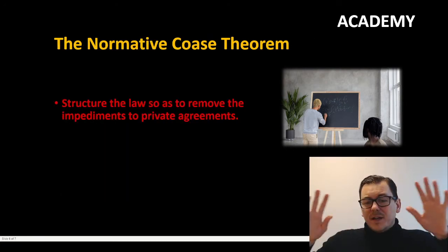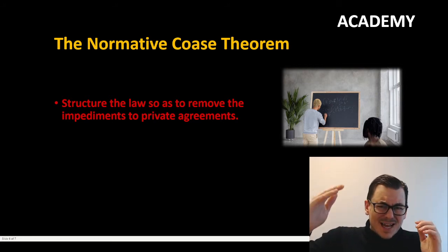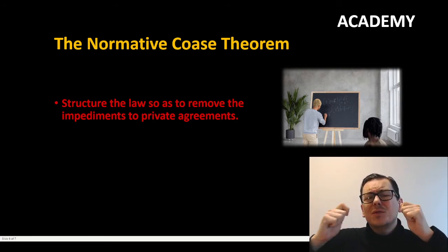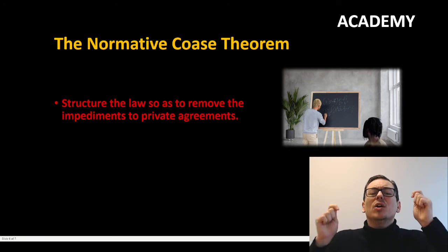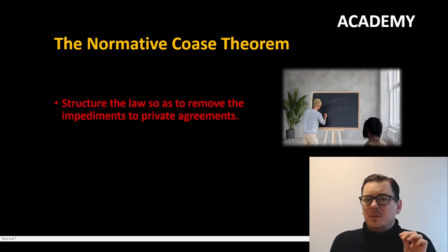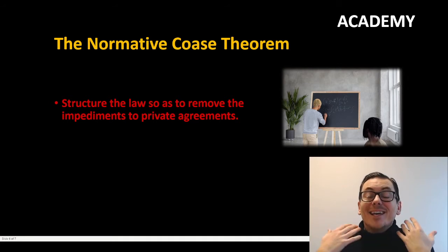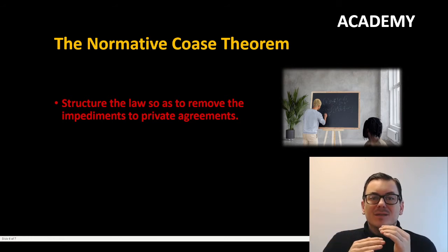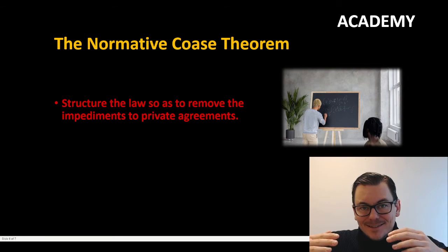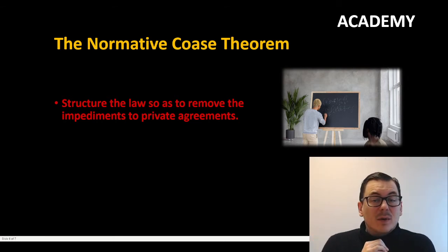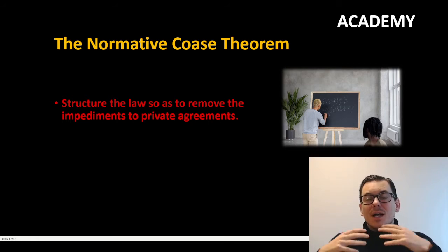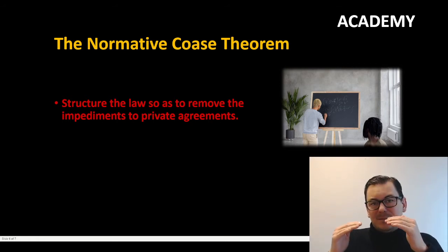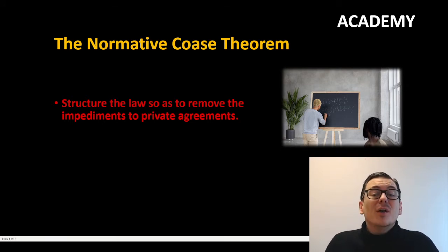So if all of this fails, what is the last solution? If we have transaction costs and want to encourage private bargaining, we should do that by structuring the law so as to remove the impediments to private agreements. Why is this good? Well, in general, no one enters an agreement without gaining some kind of wealth or profit. Hence private agreements enhance the wealth of both parties — otherwise they wouldn't enter into an agreement. So we should not have legal arrangements that limit private agreements, because then they also limit possible wealth.